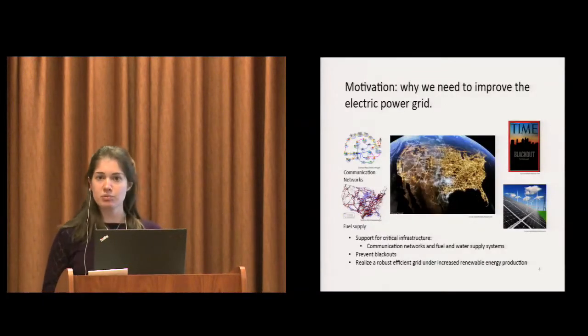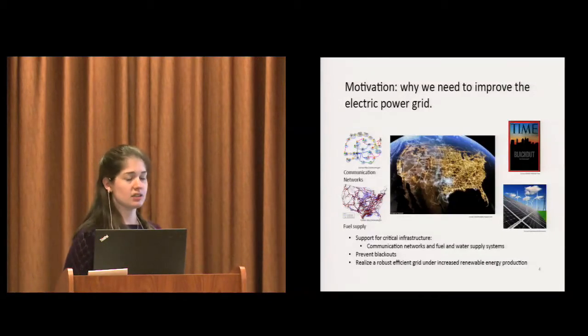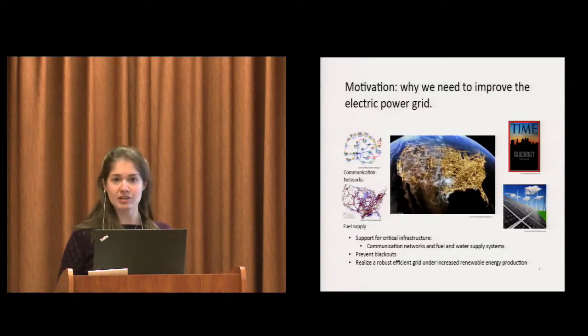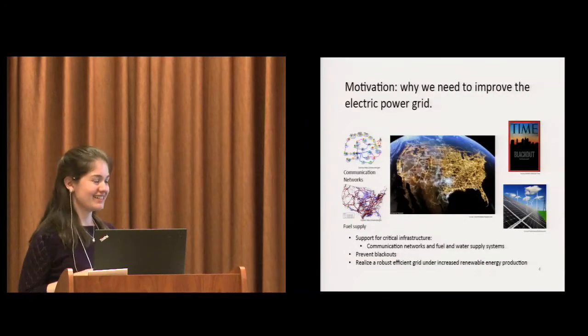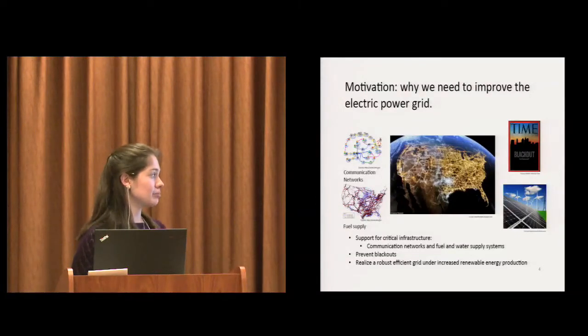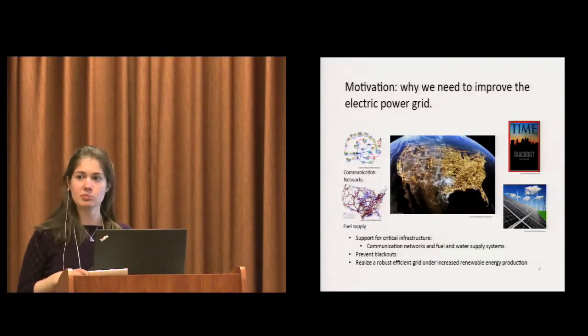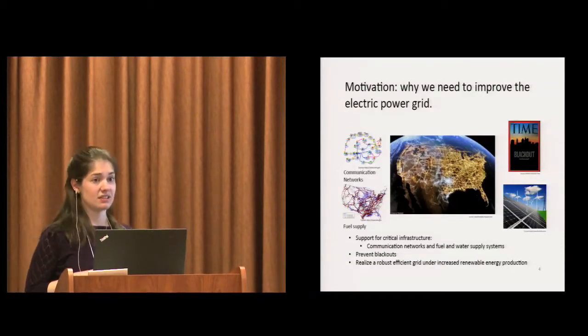The electric power grid supports much of our critical infrastructure, including our communication networks, our fuel and water supply systems, not to mention our supercomputers, something near and dear to all of us. We are interested to prevent blackouts. The electric grid is an aging machine. A lot of it hasn't been significantly updated since the 70s.